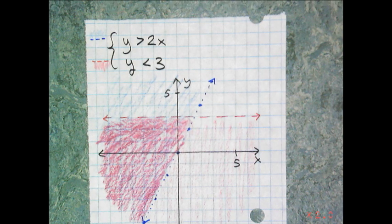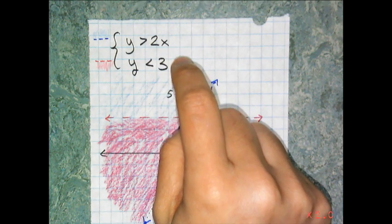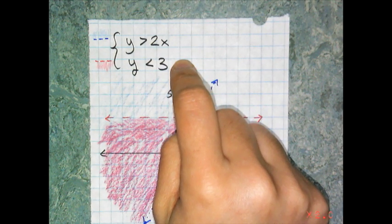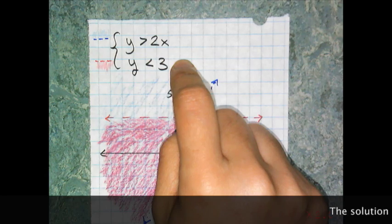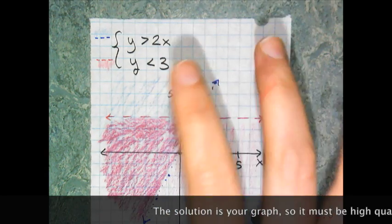This is an example of a system of inequalities, y is greater than 2x and y is less than 3. And the only way to solve a system of inequalities and the only way to write your answer happened to be graphically.